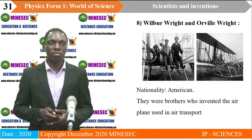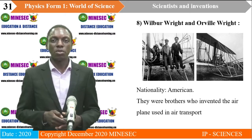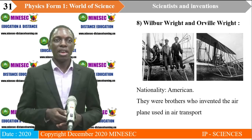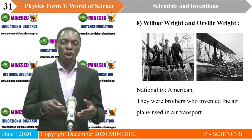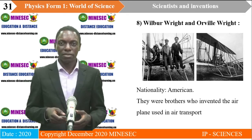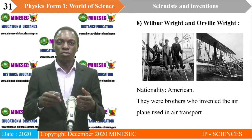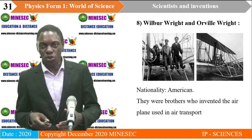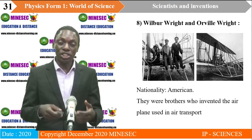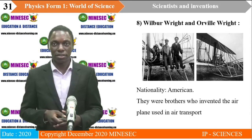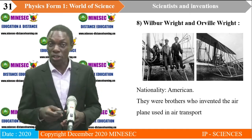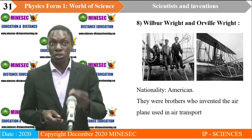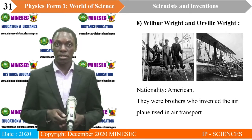Next, we have the Wright Brothers — American brothers who invented the first airplane, introducing air transport. In French, an airplane is called 'avion,' which is an abbreviation for 'Appareil volant imitant l'oiseau naturel,' meaning a flying machine which imitates a natural bird. These inventors had their inspiration from observing birds flying, which shows why observation is so important as a scientist — that observation led them to come up with this machine so important in rapid transportation.